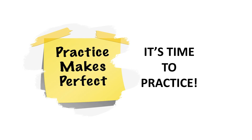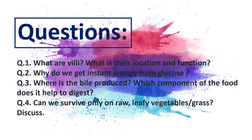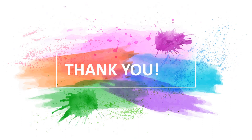Students, now it's practice time. Your questions are: Question 1 — What are villi? What is their location and function? Question 2 — Why do we get instant energy from glucose? Question 3 — Where is bile produced, and which component of food does it help to digest? Question 4 — Can we survive only on raw leafy vegetables or grass? Discuss. Thank you. See you soon in our next video.